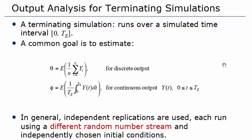The method used in each case is the method of independent replication. The simulation is repeated a total of R times, each run using different random number streams and independently chosen initial conditions, which includes the case where all runs have identical initial conditions.